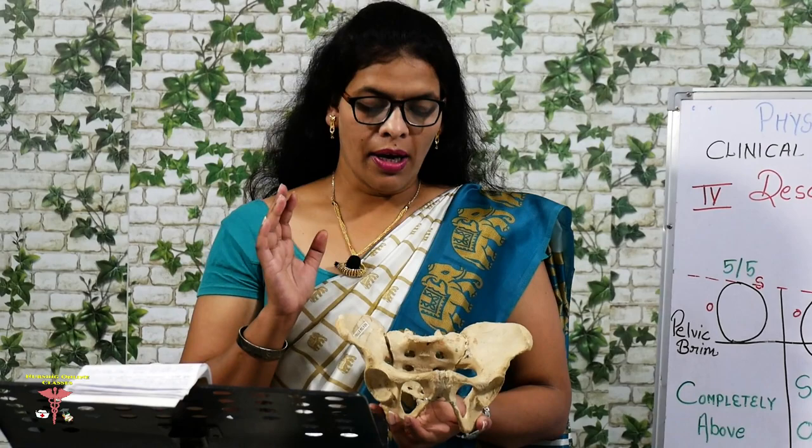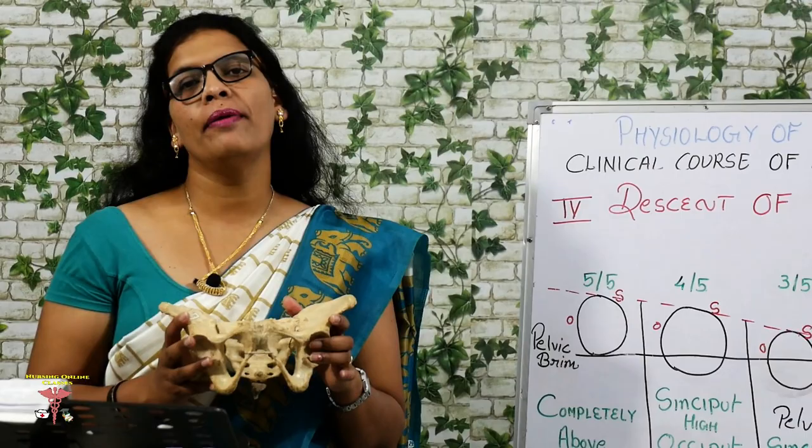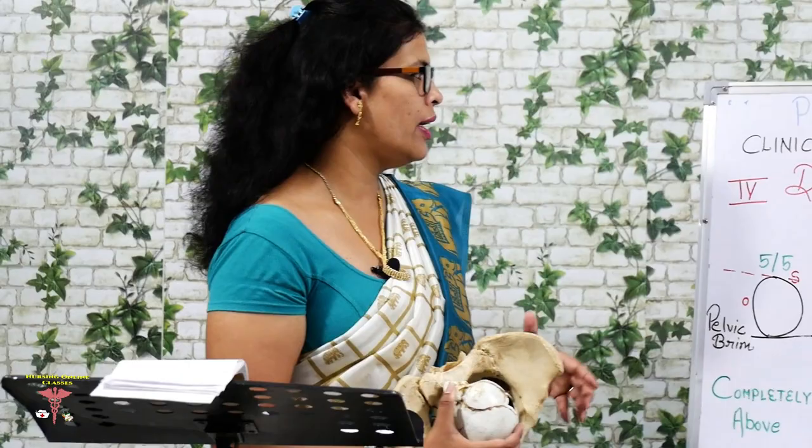You also need knowledge about the maternal pelvis — its structure, shape, inlets, brim, diameter, cavity, and outlet. Until you have proper knowledge of both the fetal skull and the maternal pelvis, the descent of the fetal head and the mechanism of labour will be difficult to understand. In further classes I will teach this, but first we will look at descent of the fetal head.